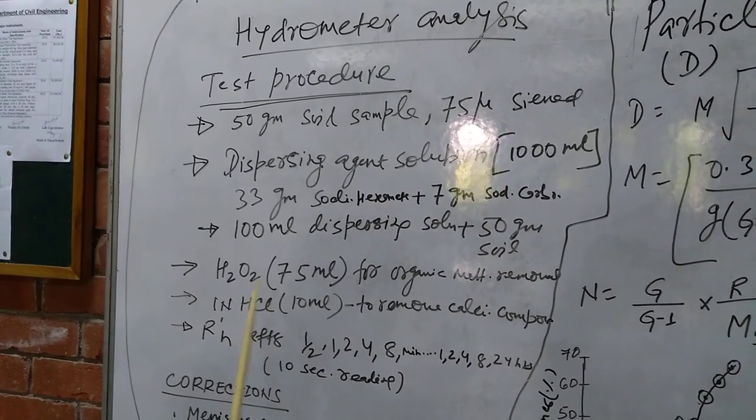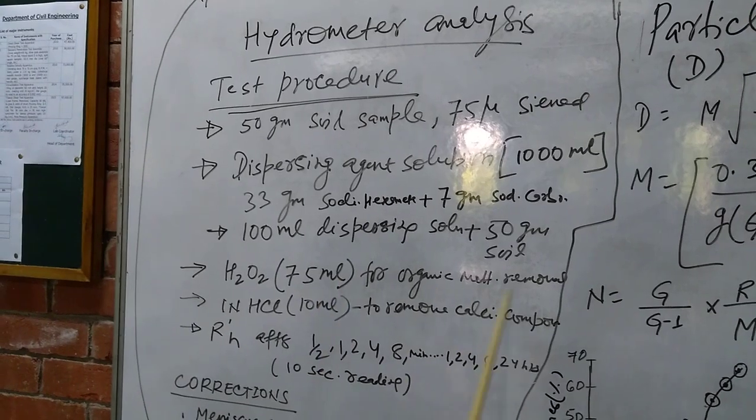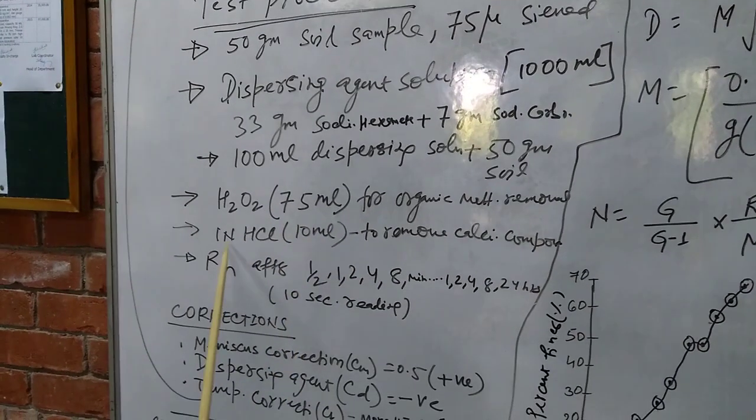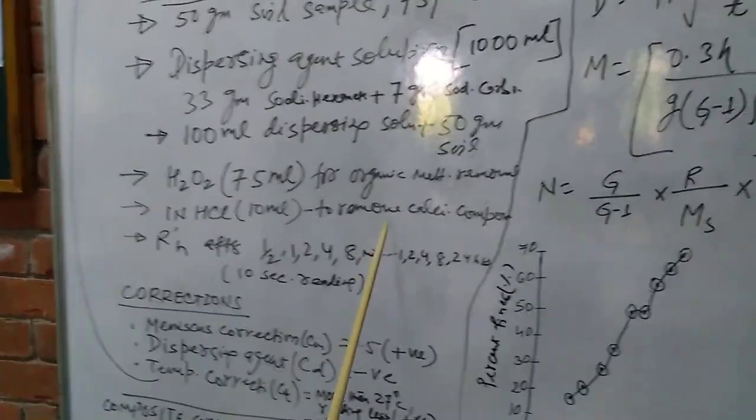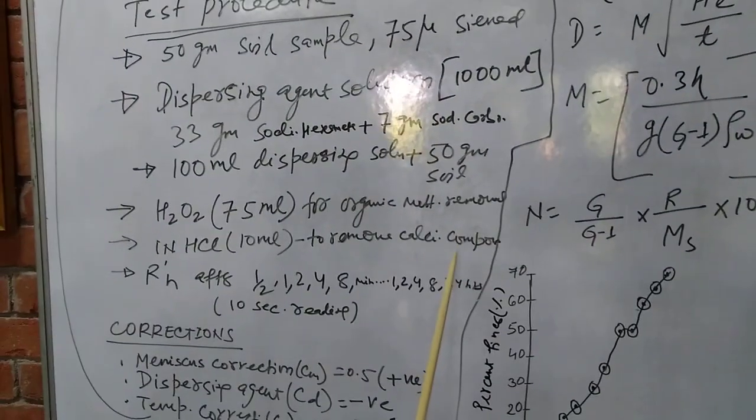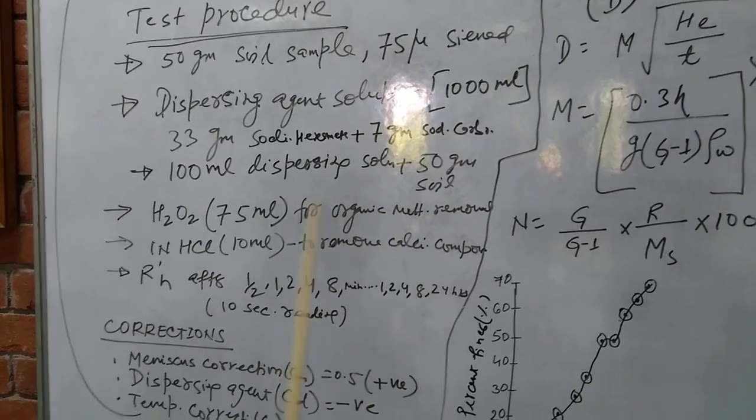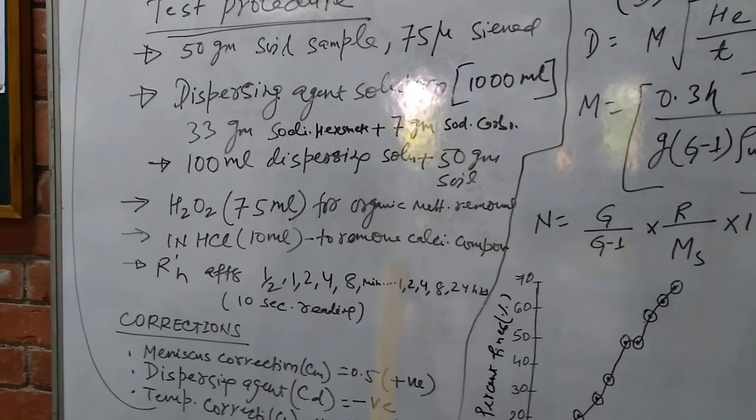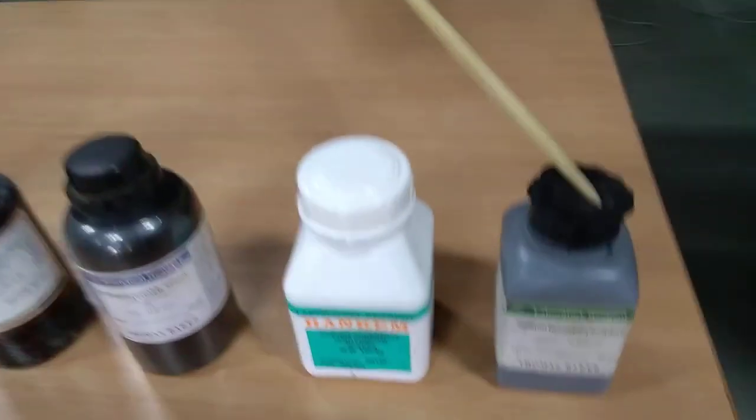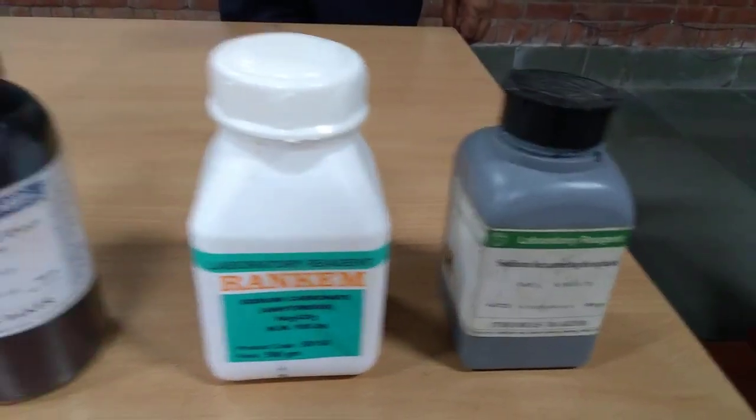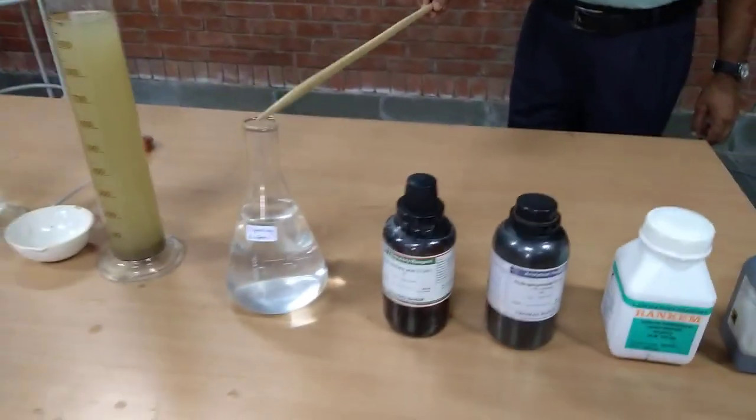We can also use 75 ml hydrogen peroxide if organic matter is available in the soil. We can use 10 ml of 1N HCl to remove calcium compound if it is available. But we should remember that in our soil, these two things - organic matter and calcium compounds - are not present. We can see here the chemicals: sodium hexametaphosphate and sodium carbonate. This we have to use for preparing the solution.